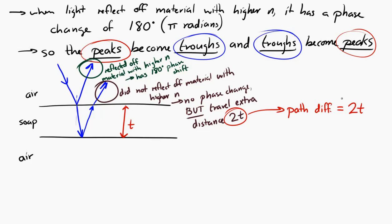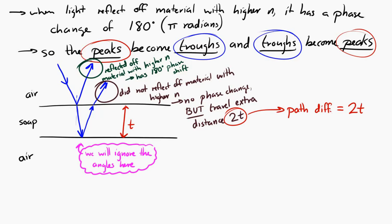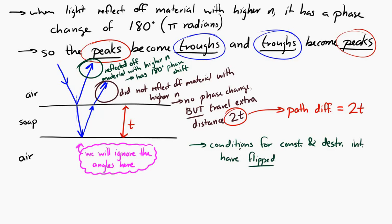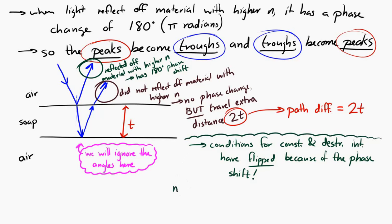You might argue about the angles — that it's not actually exactly 2t — but we're going to ignore that and say the path difference is 2t. Now, the conditions for destructive and constructive interference here are going to be a little different because of the phase change in one of the waves. Because the peaks and troughs have changed in one wave, the conditions for constructive and destructive interference are now switched. To get constructive interference, the path difference has to equal n plus one-half times lambda. And to get destructive interference, the path difference has to equal n times lambda.